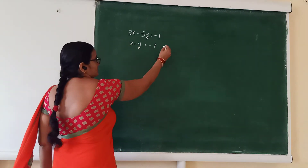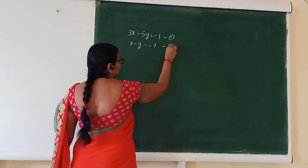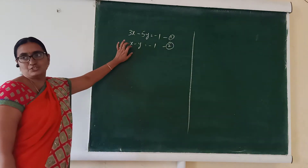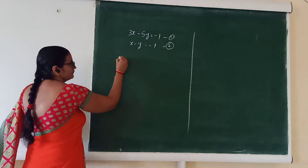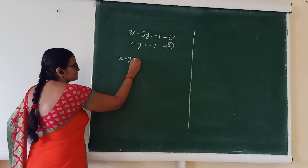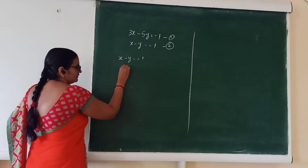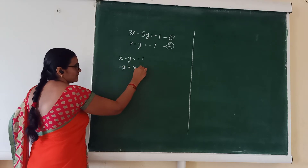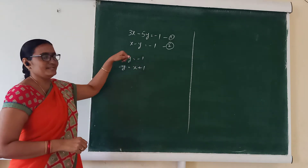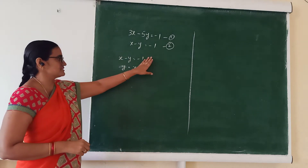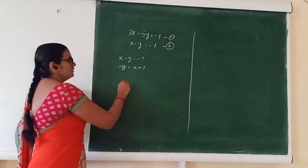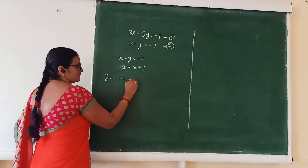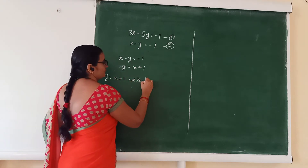Label this as equation 1 and equation 2. Take equation 2: x minus y equal to minus 1. Then x equal to y minus 1, or y equal to x plus 1. Transposing y to the RHS gives y equal to x plus 1. We substitute y equal to x plus 1 into equation 1.